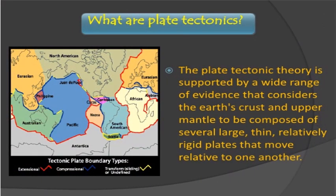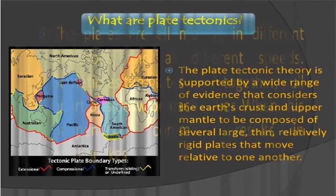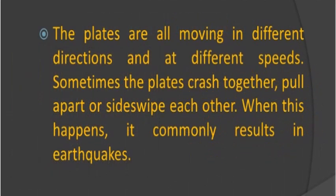What are plate tectonics? The plate tectonics theory is supported by a wide range of evidence that considers the earth's crust and upper mantle to be composed of several large, thin, relatively rigid plates that move relative to one another. The plates are all moving in different directions at different speeds. Sometimes the plates crash together, pull apart, or sideswipe each other.